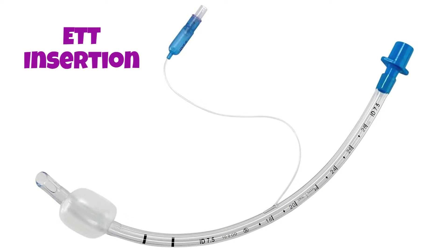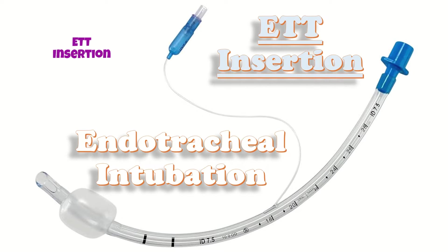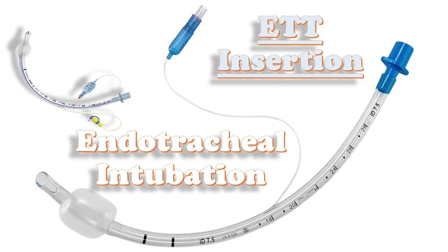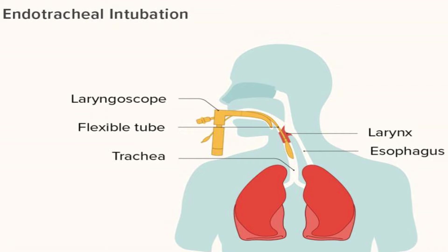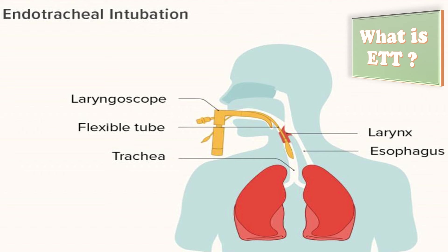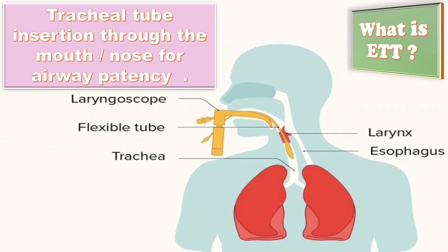The topic of our discussion today is endotracheal intubation, or ETD insertion, in the case of adults. An endotracheal tube, or ETD, is a specific type of tracheal tube that is inserted through the mouth — when it is called orotracheal — or through the nose — when it is called nasotracheal — for the purpose of establishing and maintaining a patent airway.